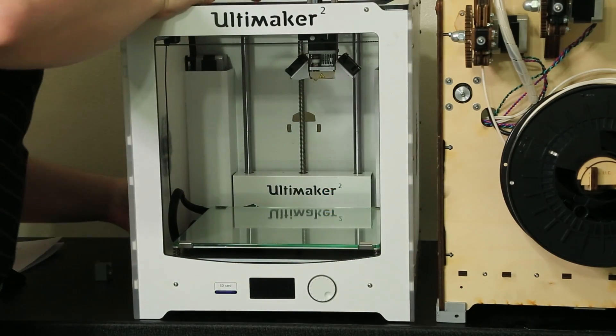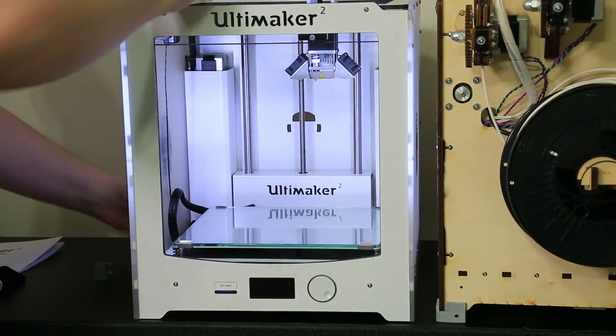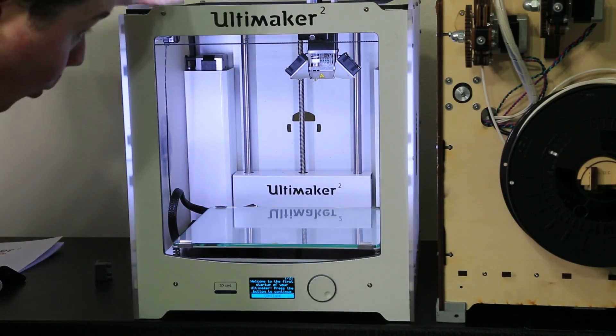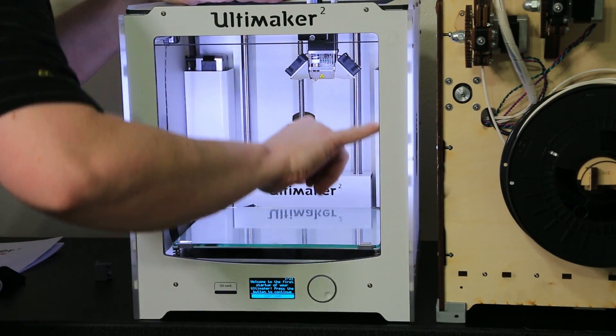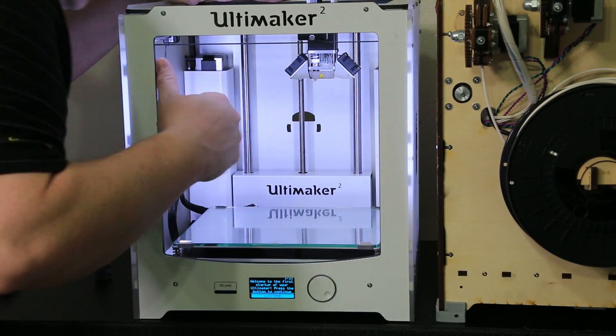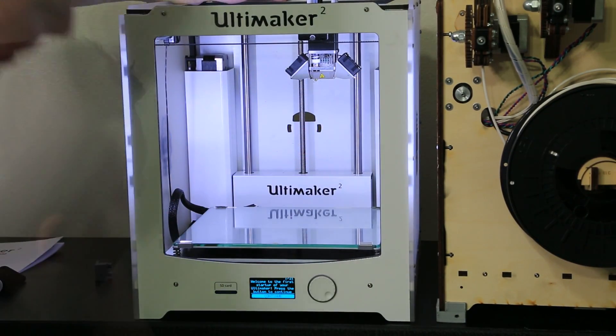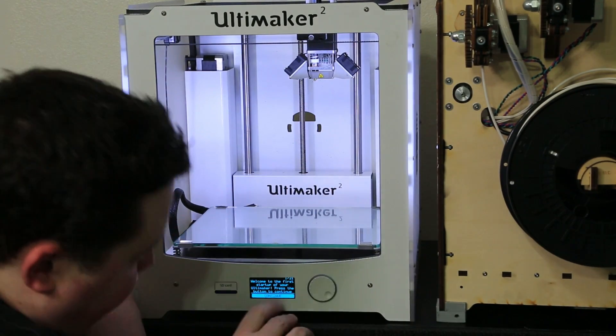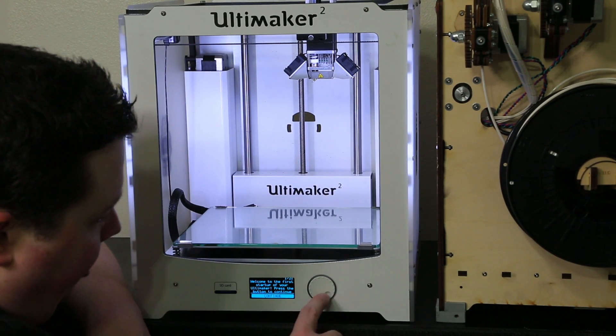Alright guys, moment of truth, firing it up for the first time. Oh my god, wow, look at that lighting! That is going to be so awesome for videos. It's got custom LED strips all the way down the side, across the top and down the bottom. So just look how well lit that is. That is epic man. I can't get over how well lit that is. That is awesome. Alright, so it says right down here on the screen it says welcome to your first startup of your Ultimaker, press the button to continue.